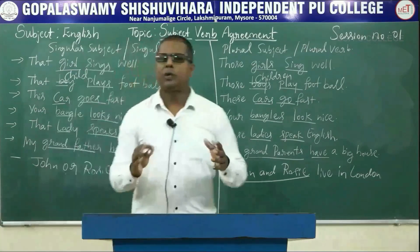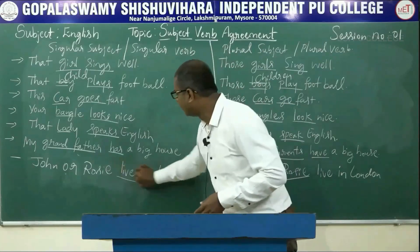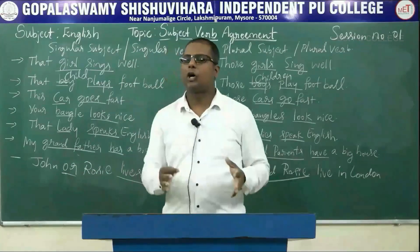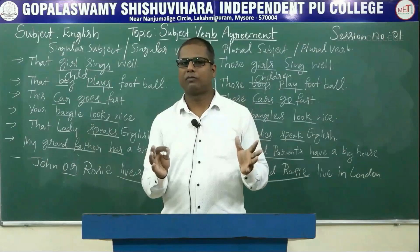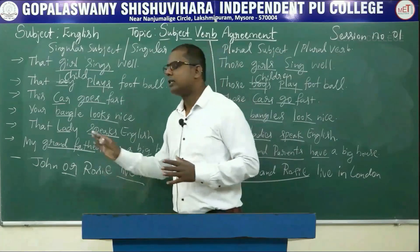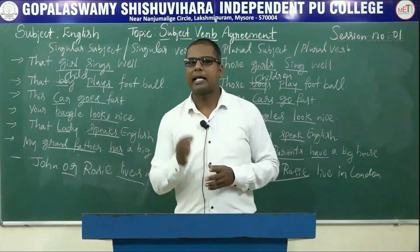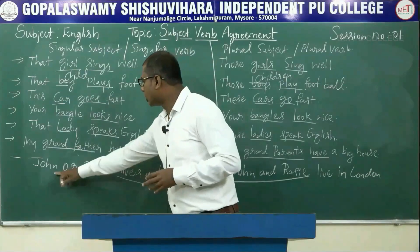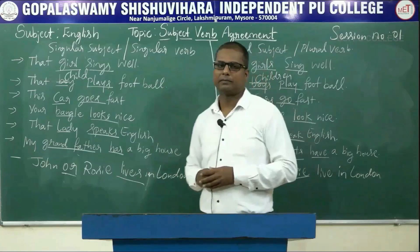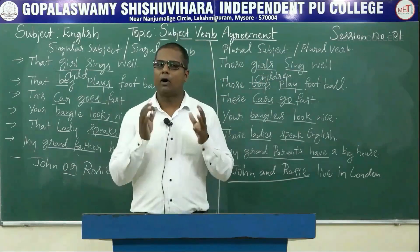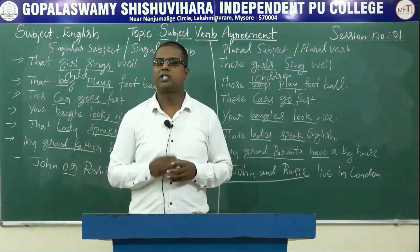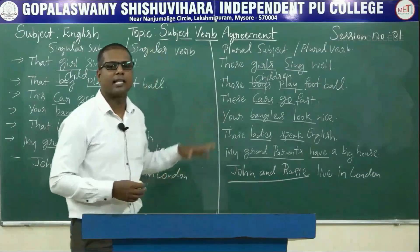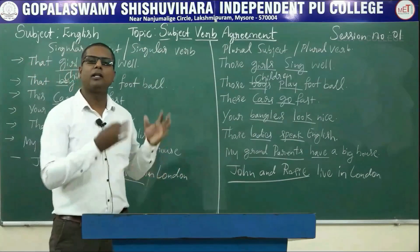There is another type of compound subject connected by 'or': for example, 'John or Rosie lives in London.' Here we use a singular verb 'lives' because the conjunction 'or' means either John or Rosie is in London — not both. So the subject is considered singular and takes a singular verb. This type of compound subject connected by 'or' is not common but useful to keep in mind.